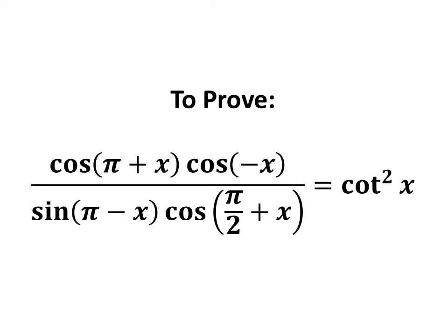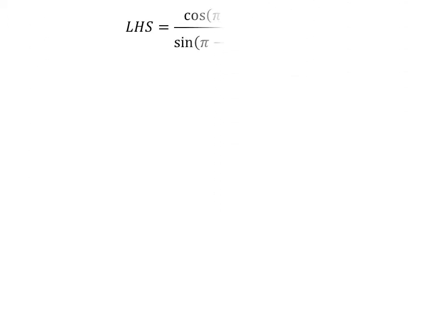In this video, we will learn to prove the equation: cosine of pi plus x times cosine of minus x, upon sine of pi minus x times cosine of pi upon 2 plus x, is equal to square of cotangent of x. The left hand side of the equation to be proved is cosine of pi plus x times cosine of minus x, upon sine of pi minus x times cosine of pi upon 2 plus x.